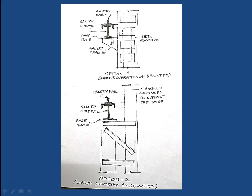In both arrangements you can see small tie members connecting the channel section to the stanchion. These tie members are purposefully added to prevent the toppling motion of the girder due to the load from the gantry.